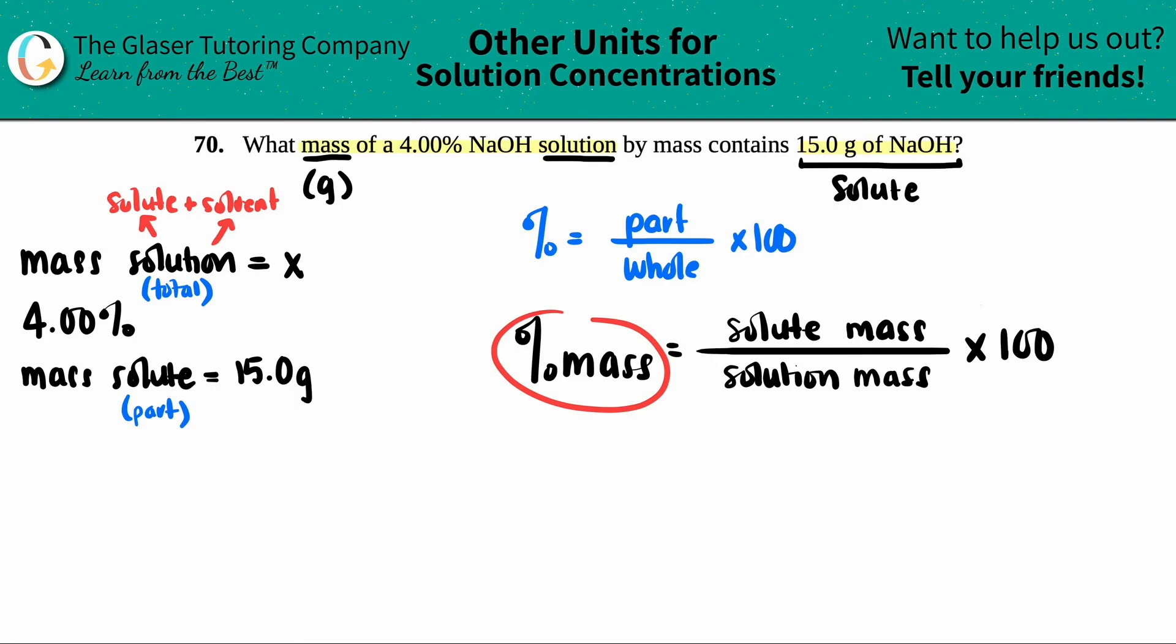It's a percentage. In this case, it's a percent mass, because they keep talking about grams, and it's the solute mass, that's the part, divided by the whole thing, that's the whole, or the total, times 100. So let's just plug it in. The percent they told us was 4%, right? 4.00. And that equals the part, which is the solute, so that's 15, divided by what we're solving for, times 100.